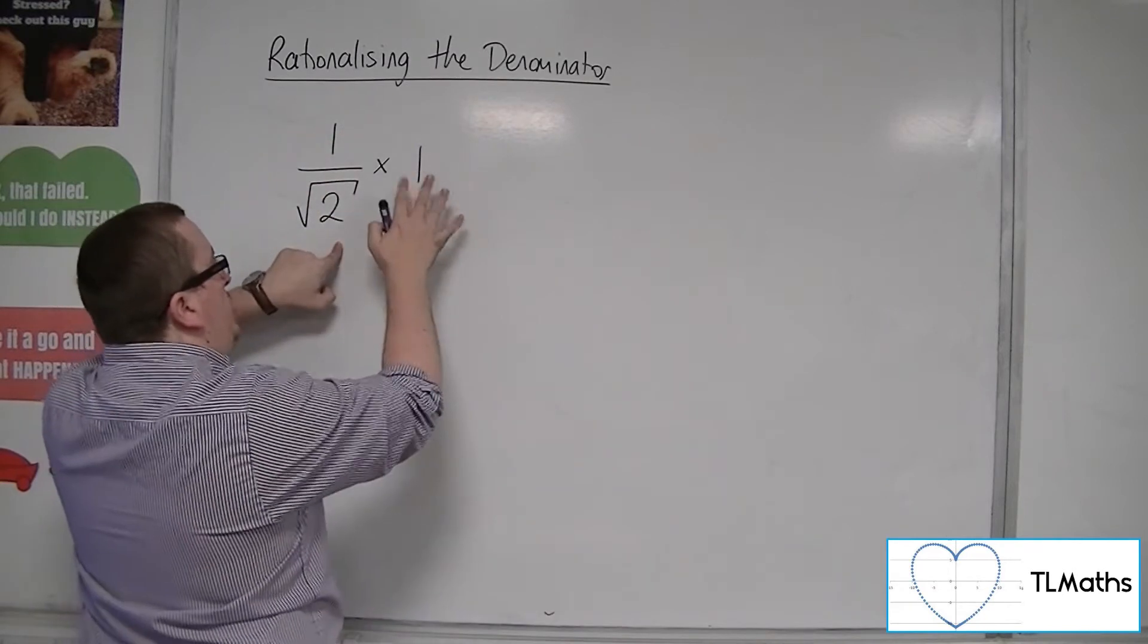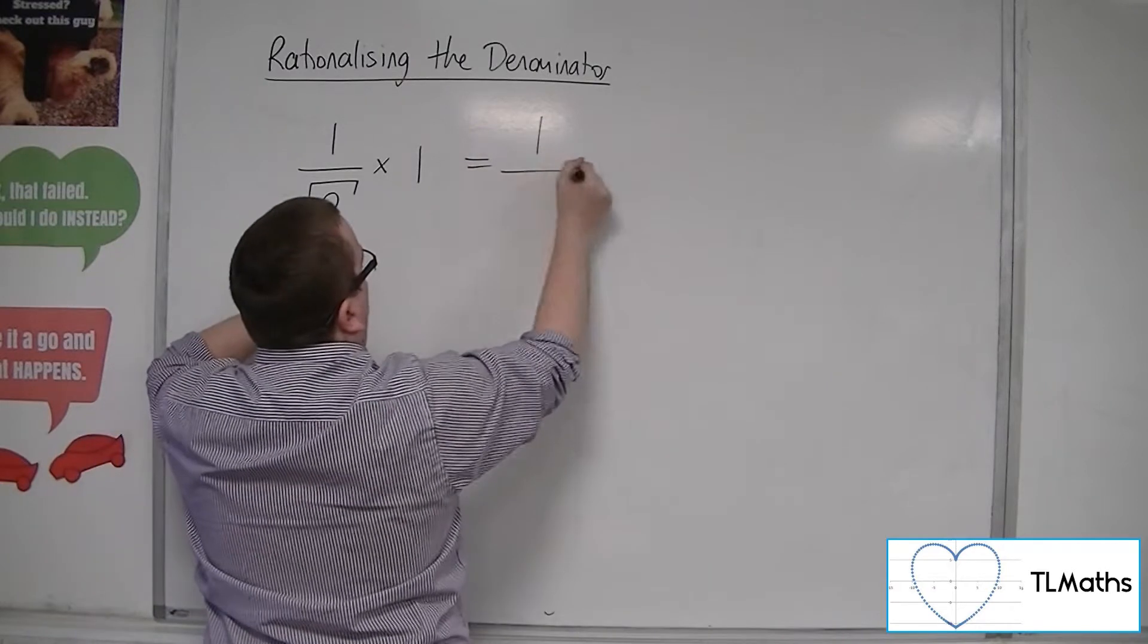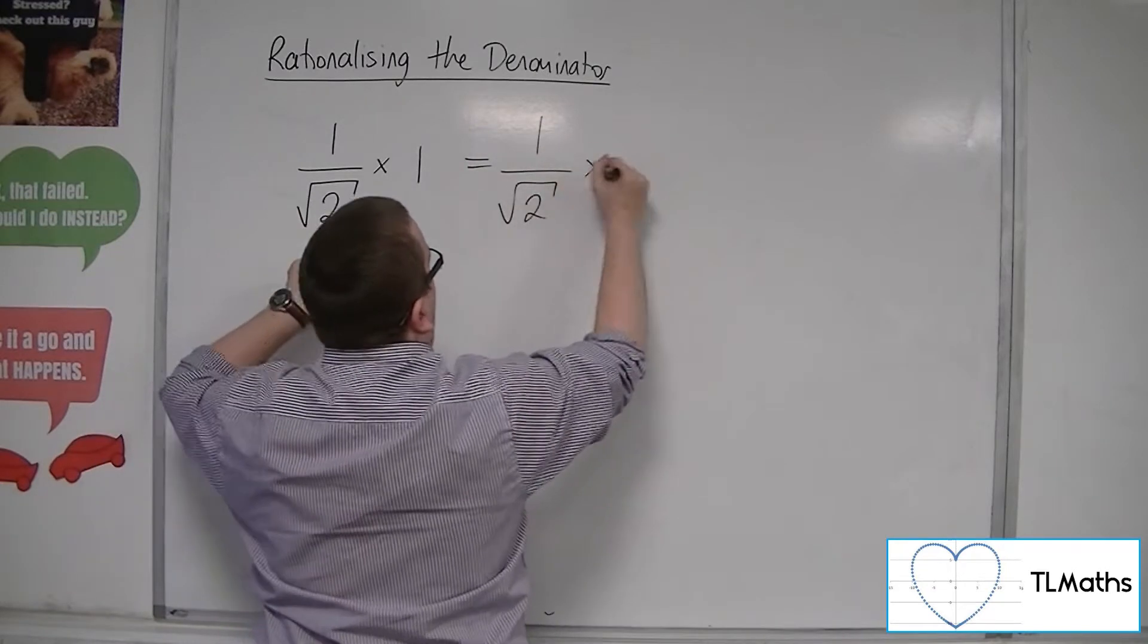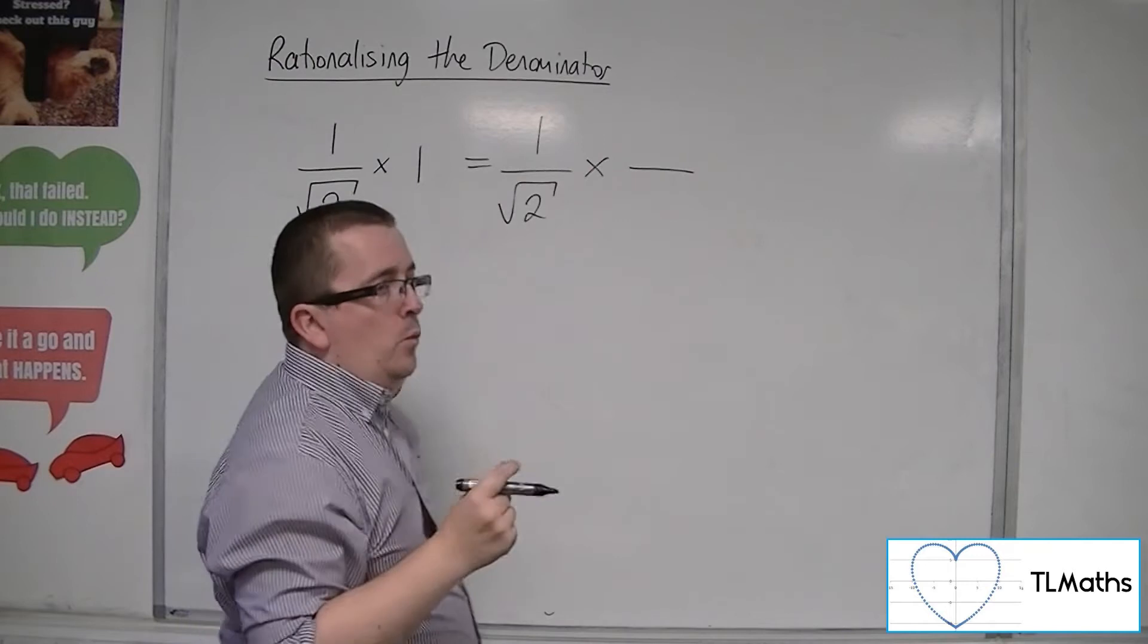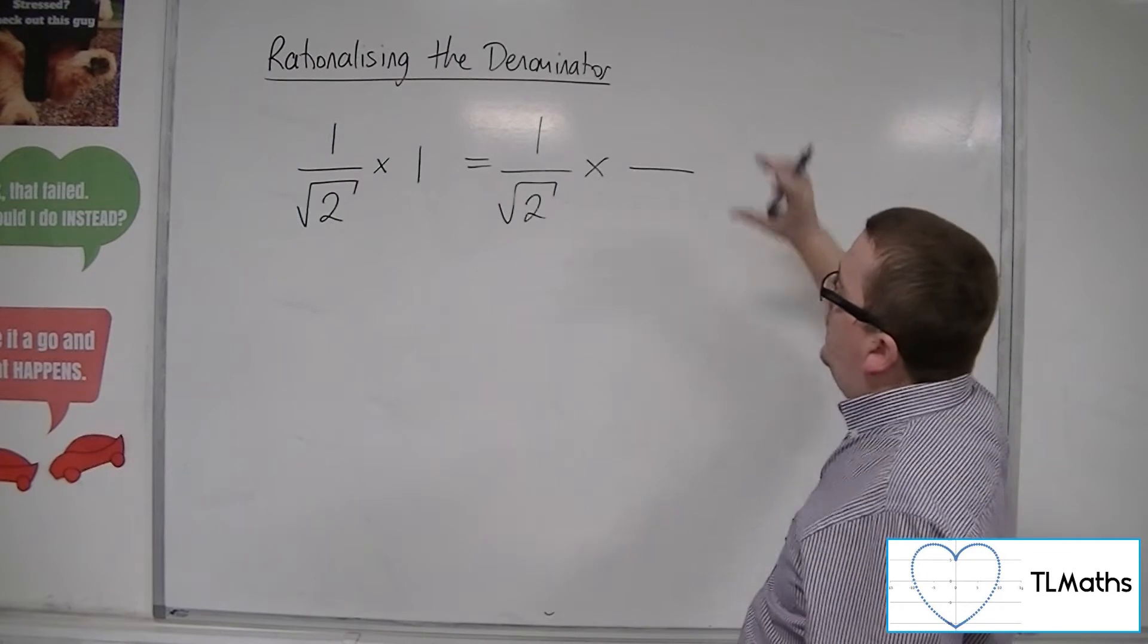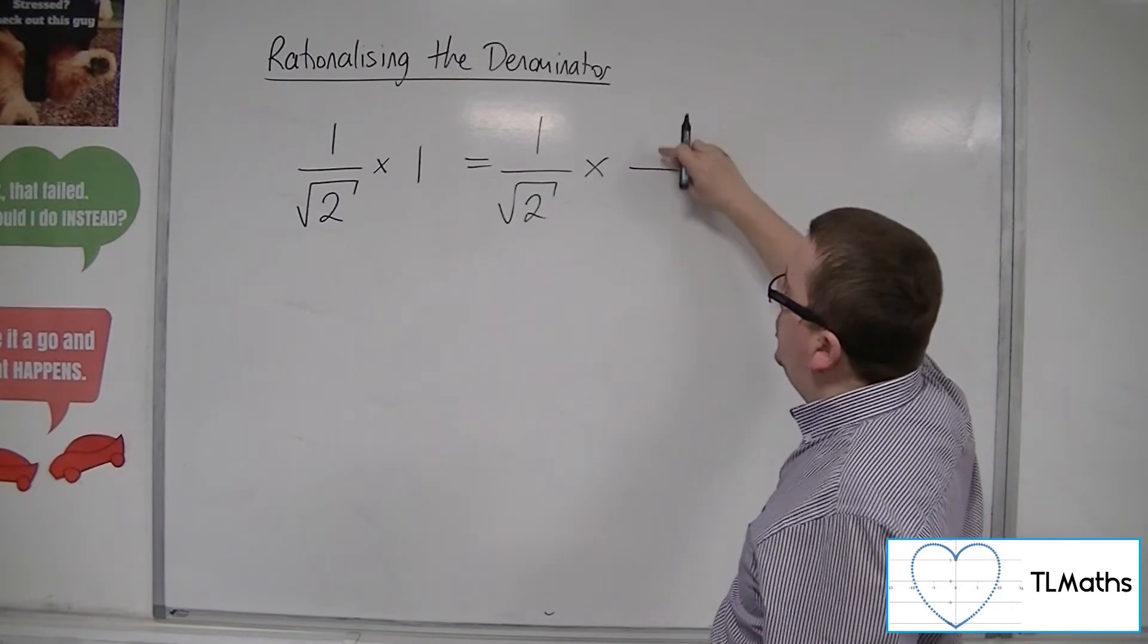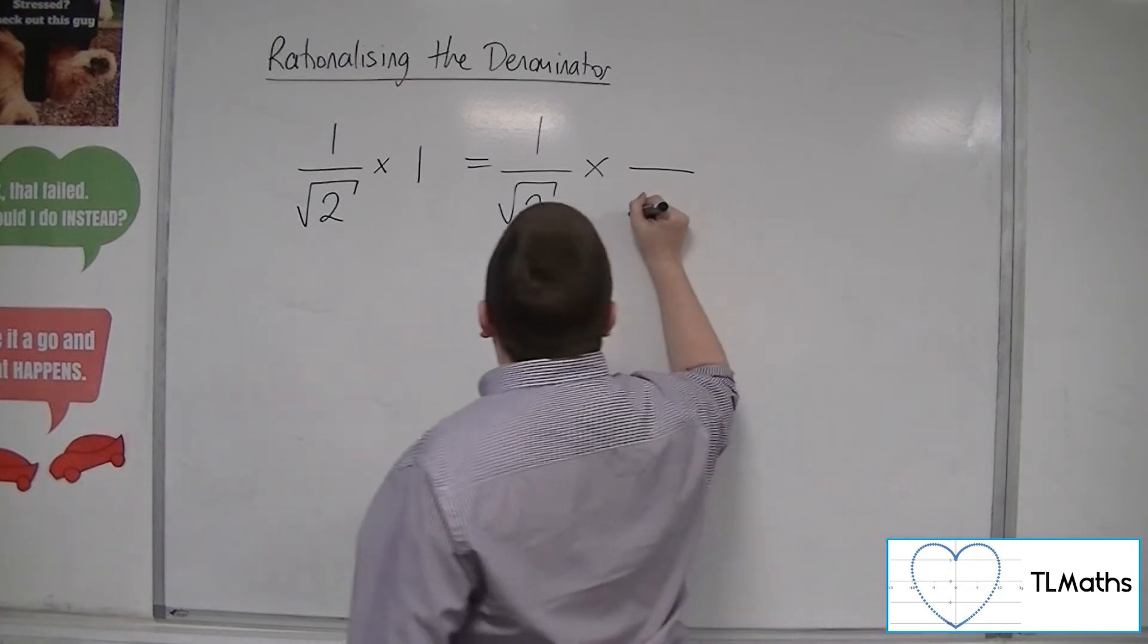So I can choose what this 1 looks like. I can choose it to be a fraction where the numerator and the denominator are the same. So if I choose this fraction to be root 2 over root 2, for example,